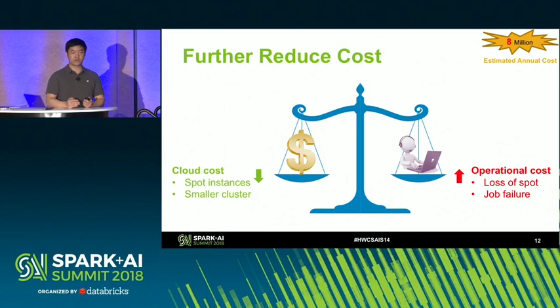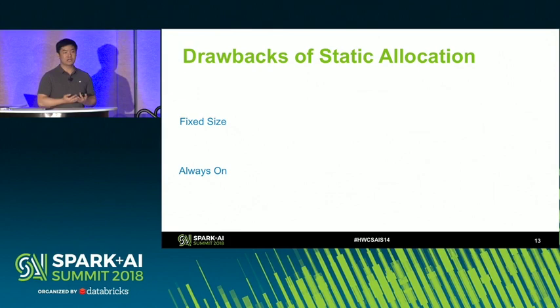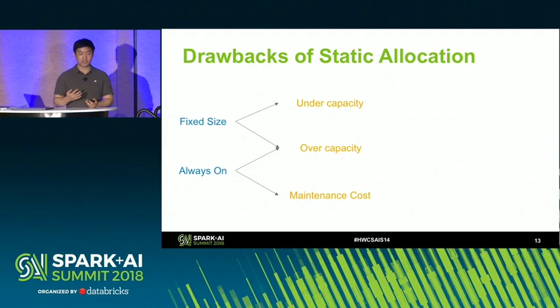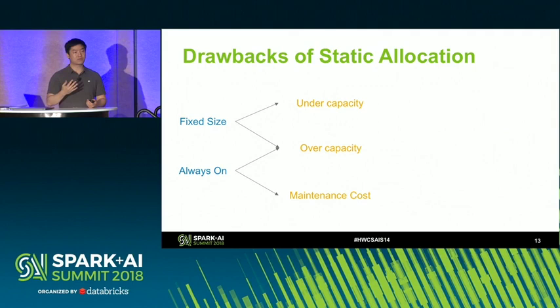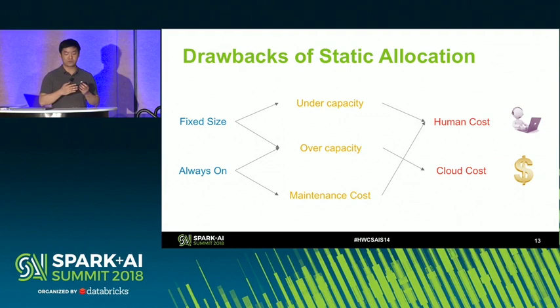After much exploration on the static cluster approach, the drawbacks really come down to two root causes: fixed size and always-on. Fixed size leads to underutilization or overcapacity depending on the workload. Always-on results in overcapacity when the cluster is not being used. We also pay attention to maintenance costs — with spot instances we need to ensure the cluster stays up, and when doing system upgrades or security patches, we have to push through all the static servers, adding to human cost and cloud cost.